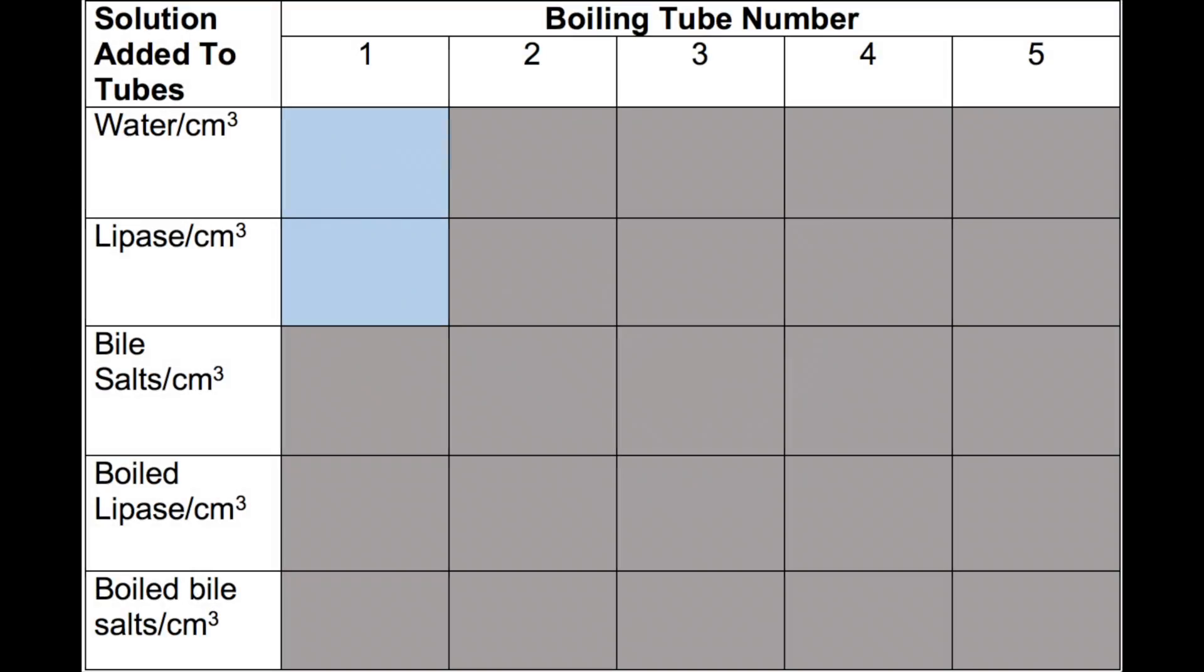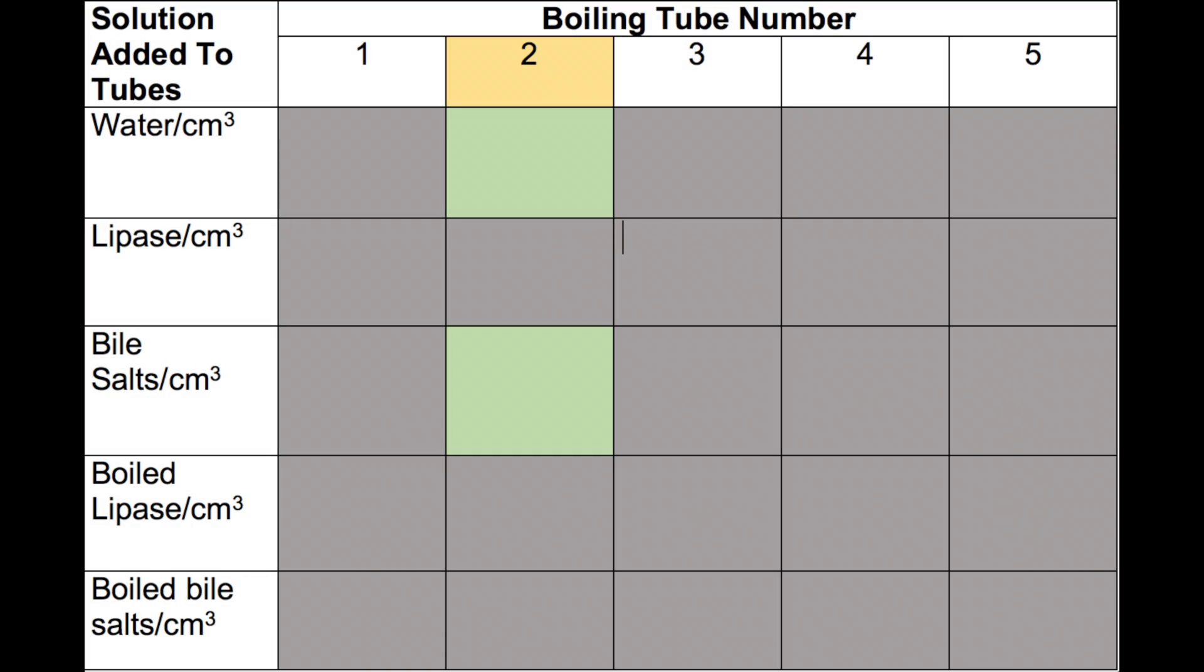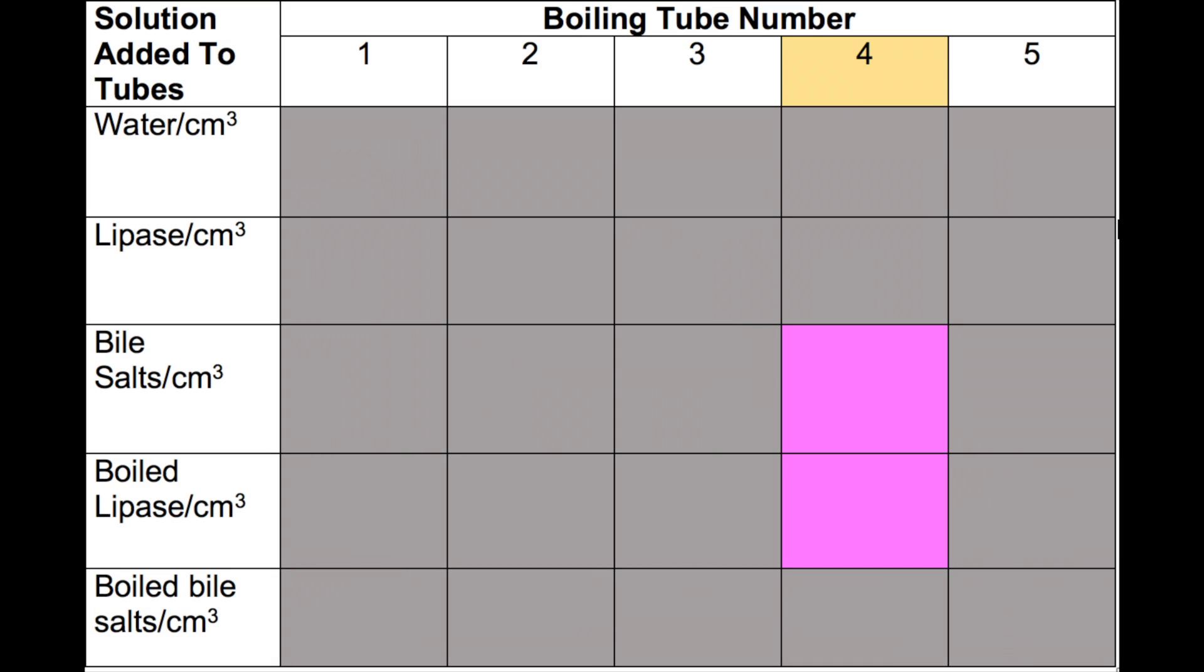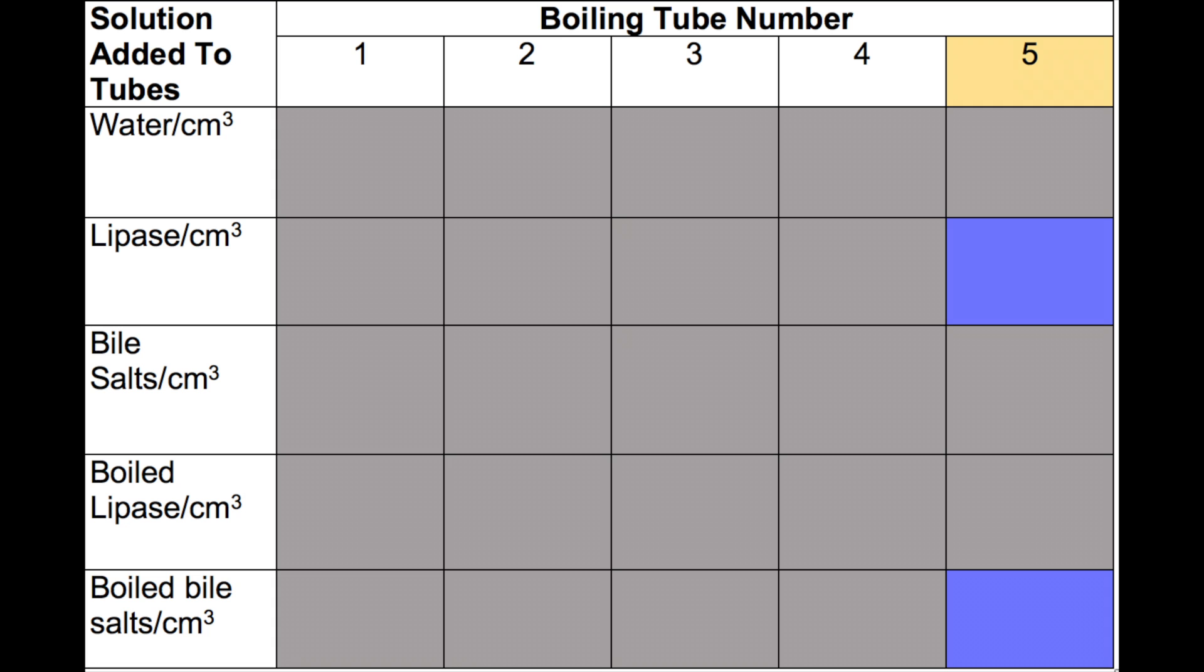From the table provided, add the reagents as indicated. Place all the remaining four tubes back into the water bath and make a note of the time taken for the phenolphthalein in each tube to decolorize.